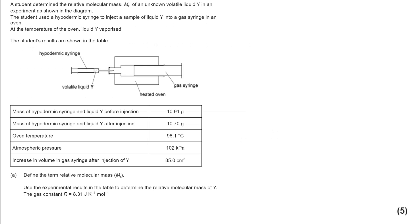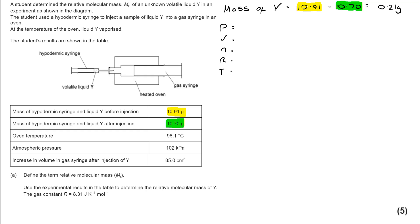So the question itself here — we've got lots of information in this table that we need to work out where we're going to use. The fact that R is there is a big giveaway that we're dealing with the ideal gas equation. To start off with, I'm going to calculate the mass of Y that was used. I can look at what the syringe was after the injection and before the injection, and I can see that 0.21 grams of Y were used. To do the ideal gas equation, I would always recommend you write out the five different sections and put the figures down — it's that systematic route through that's going to help you avoid the common pitfalls.